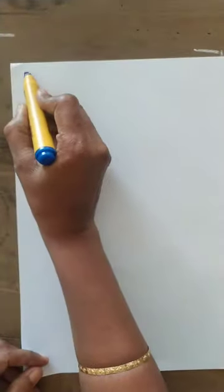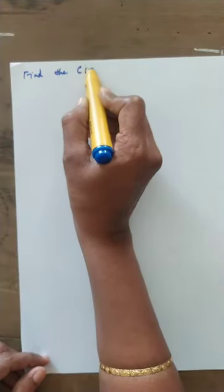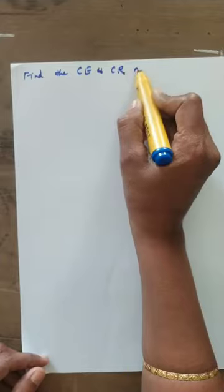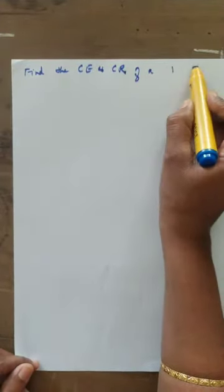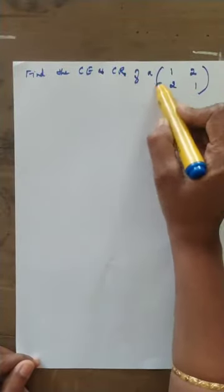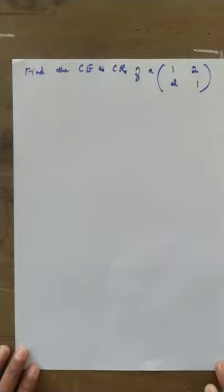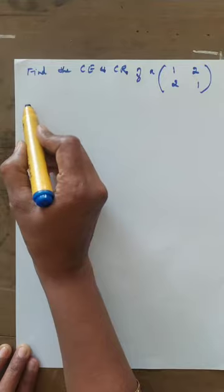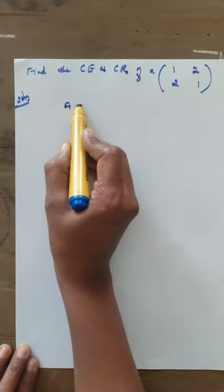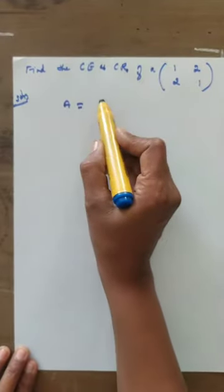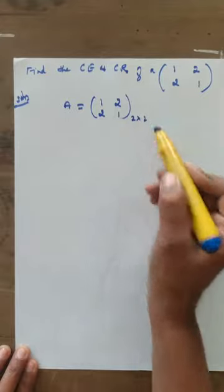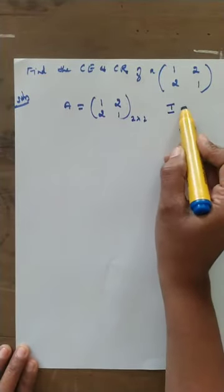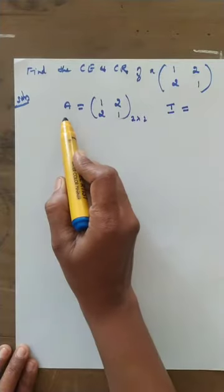Solve this equation to get the values of lambda — those values are called characteristic roots or eigenvalues. For example, find the characteristic equation and characteristic roots of matrix A equals 1, 2, 2, 1. This is a 2 cross 2 matrix. Take the identity matrix I of the same order as A, which is 1, 0, 0, 1.